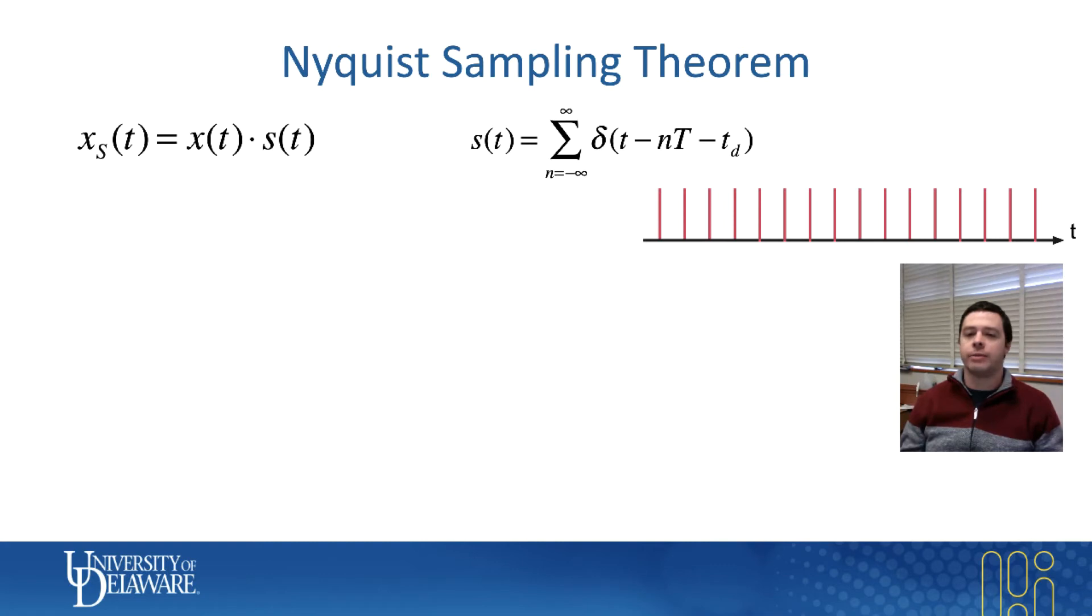So the function that describes the discrete sampling can be written as an infinite series of delta functions where each delta function is time delayed by an interval, comes at an interval capital T, and it might be time delayed from my original signal by an amount that I'll call T sub D, or the time delay.